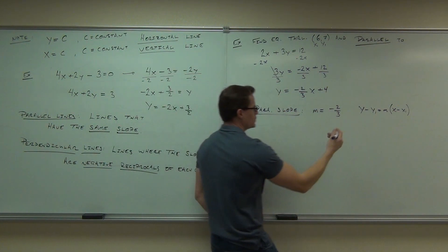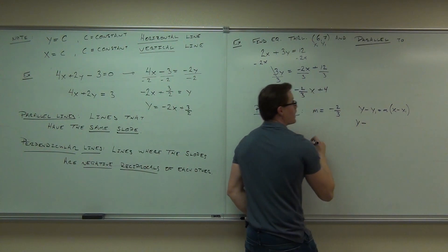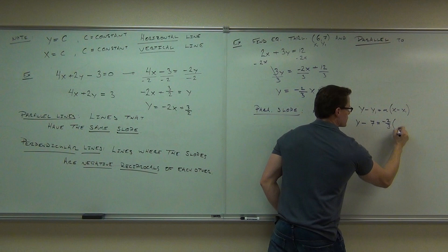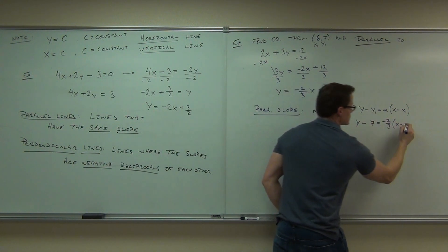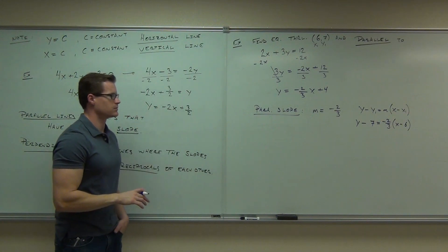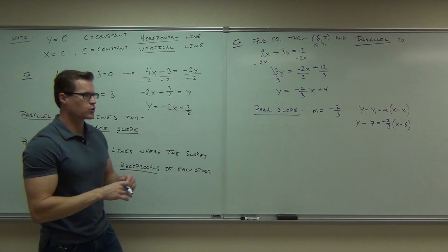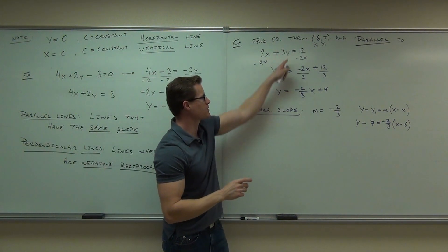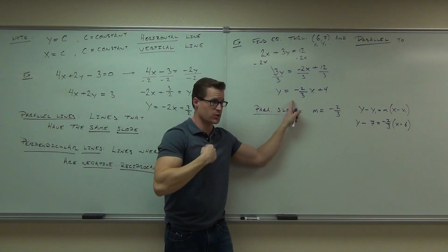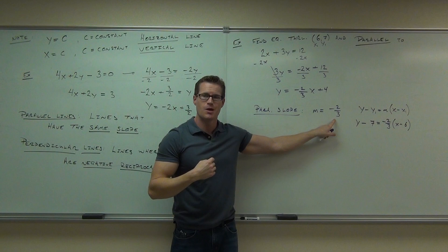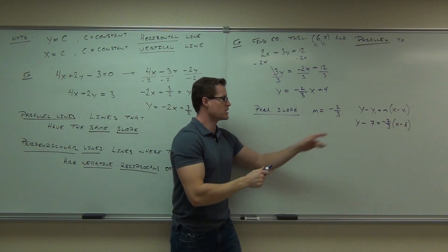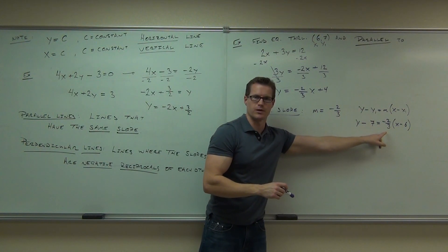So we'll do y minus 7 equals negative 2 thirds x minus 6. Quick show of hands, how many people feel okay solving for a slope? Keep it up if you understand that the slope we're supposed to use is still negative 2 thirds because we want to find a parallel. Do you see where the 6 and the 7 are coming from?